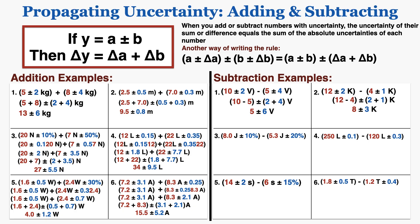In subtraction number 3, the numbers are expressed with percent uncertainty, so I need to convert those to absolute uncertainties by multiplying the percent as a fraction times the original number. Once I have those absolute uncertainties, I subtract one number from the other and add their absolute uncertainties to get the answer.